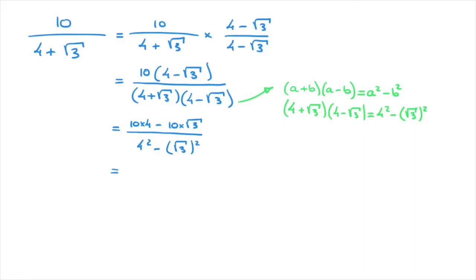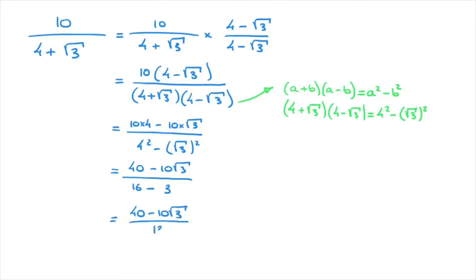Carrying on, the numerator becomes 40 minus 10 root 3, all over 4 squared — which equals 16 — minus (square root of 3) squared — which equals 3. Finally, we can state that this equals 40 minus 10 root 3 over 13, and we're done. We've just rationalized this denominator.